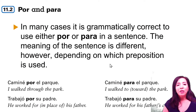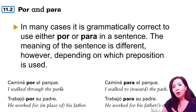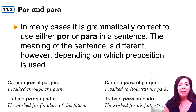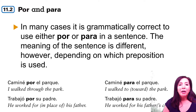Now, sometimes you can use either one, but your sentence may change meanings. Camine por el parque — I walked along the park — is different from camine para el parque, which means the park was your destination. Trabajo por su padre means somebody was substituting their father, versus trabajo para su padre, which means the father was the employer.